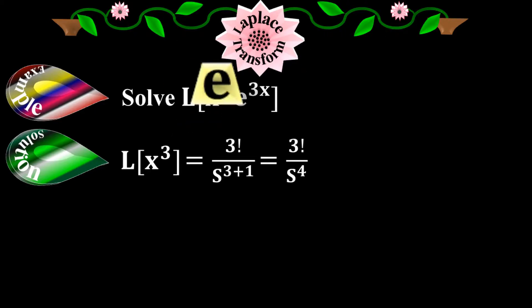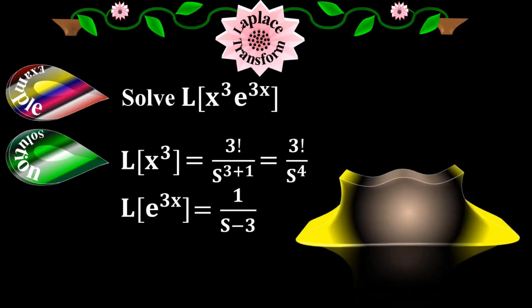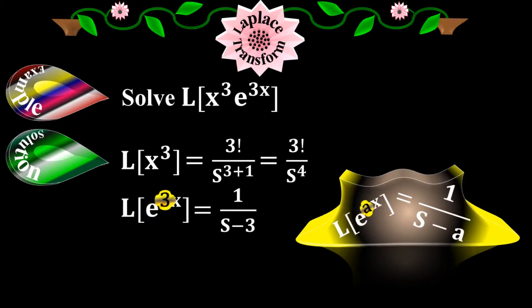Now I take the second elementary function, which is the exponential function e to the 3x. The Laplace of e to the 3x equals 1 over s minus 3. I applied the second elementary function formula: Laplace of e to the ax equals 1 over s minus a, where the constant a is 3.